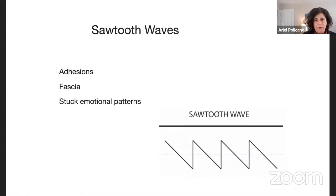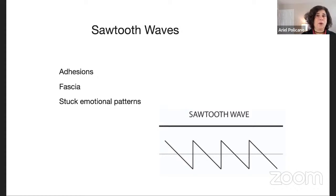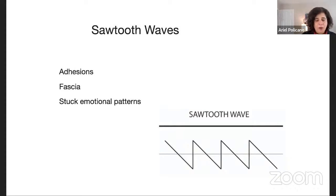The sawtooth wave is great for breaking up stuck patterns. You can almost see how it would break things up — it's jagged, bringing you up and then right back down, keeping you guessing. Physical adhesions from past surgery, tight fascia or connective tissue, posture issues, and stuck emotional patterns all respond well to the sawtooth wave. There's also an alternating option on both the Genius and the capsule. The developer recommends alternating as the default — that way you get the benefit of all three waves in different loops.